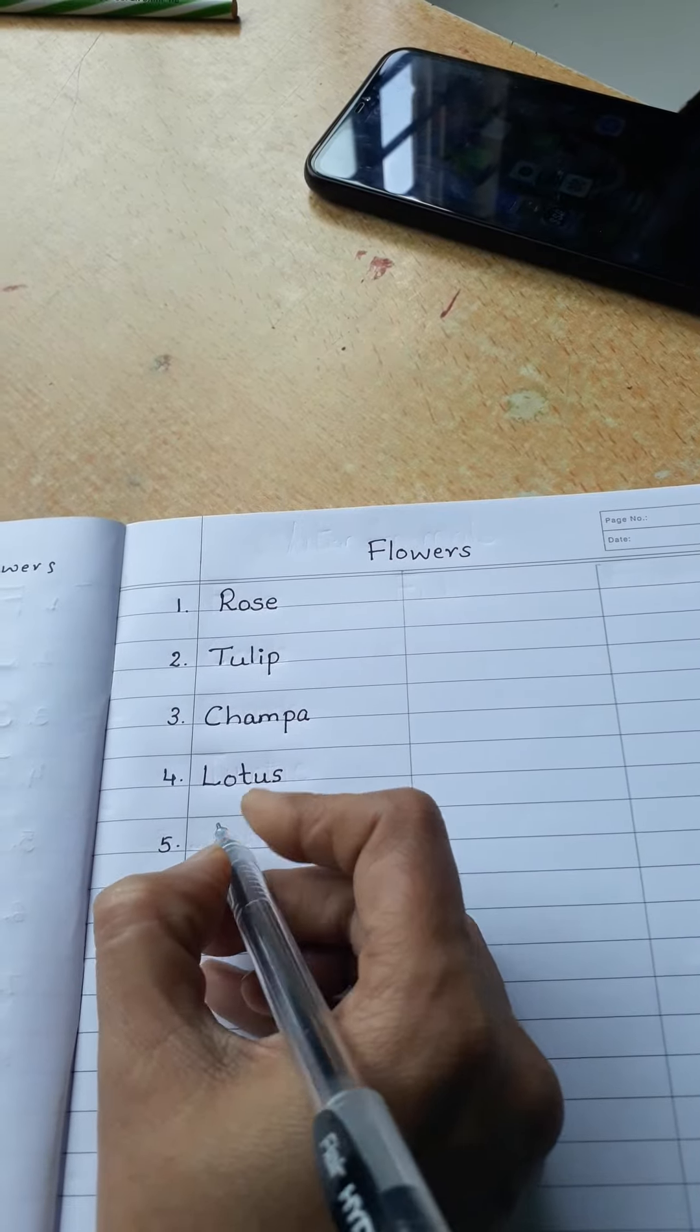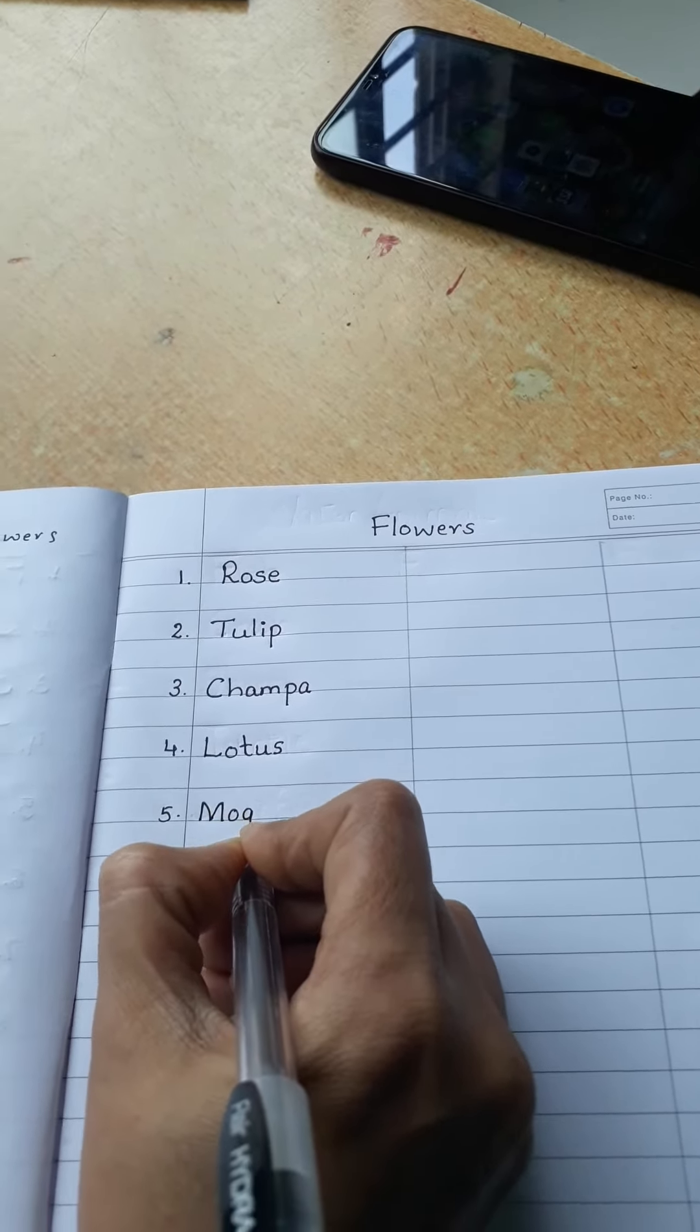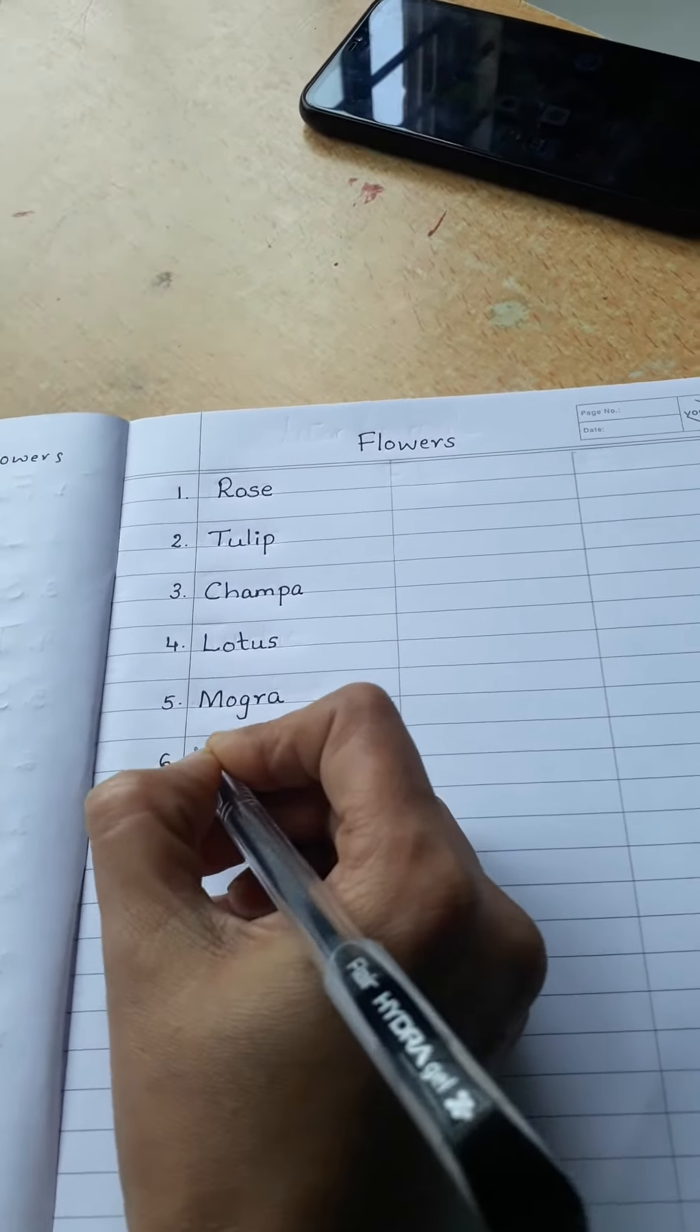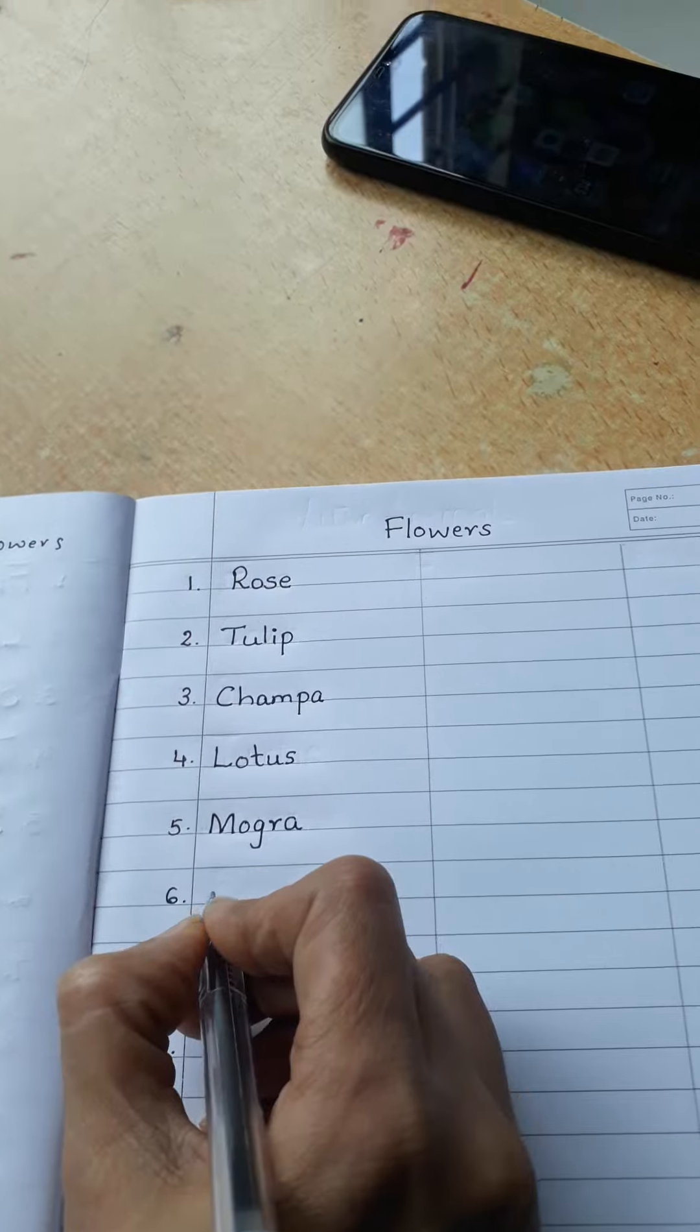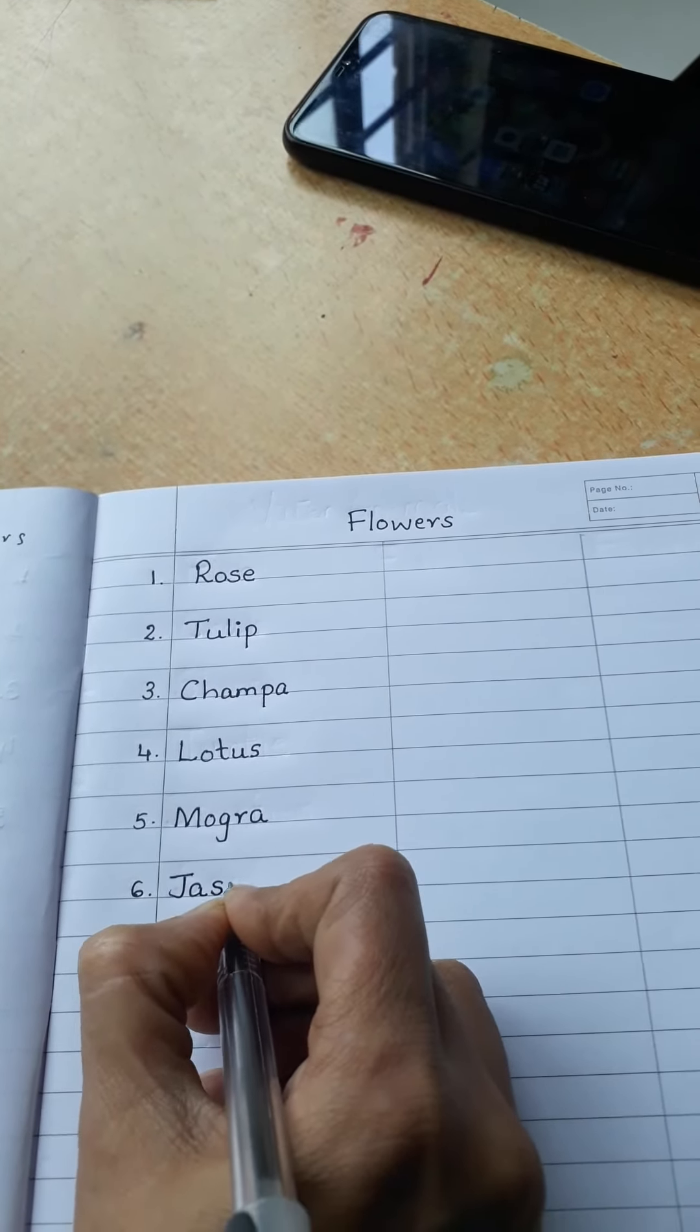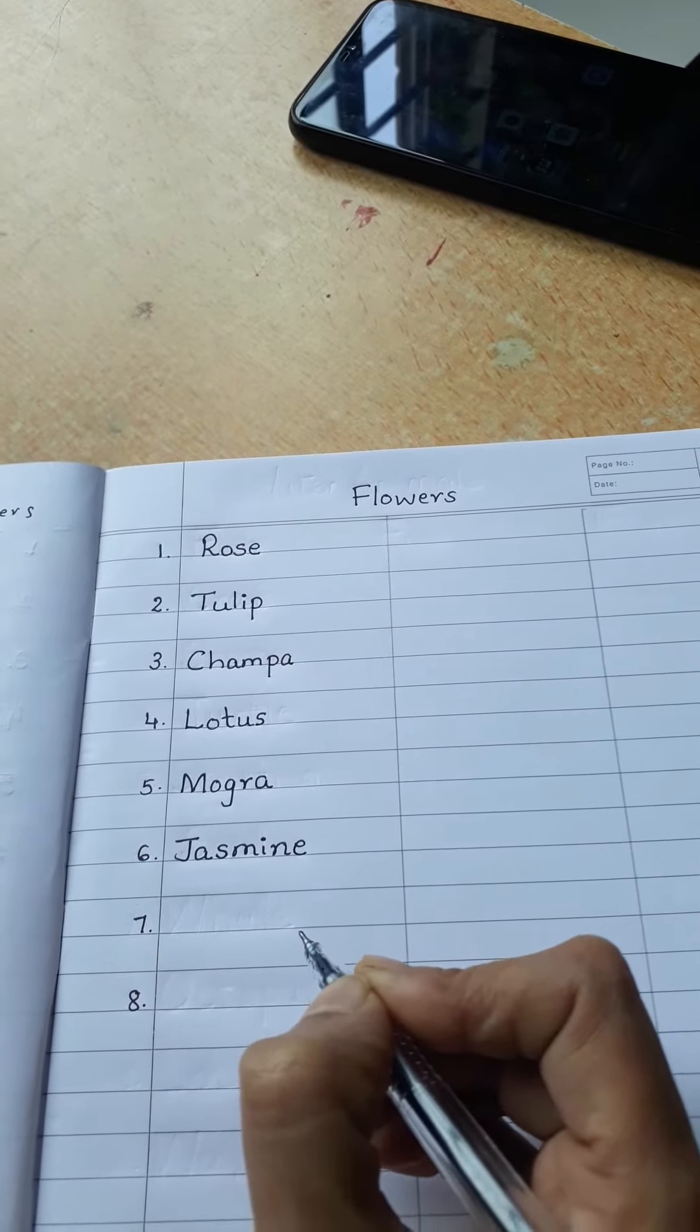Next is mogra. M-O-G-R-A, mogra. Sixth one is jasmine. J-A-S-M-I-N-E, jasmine.